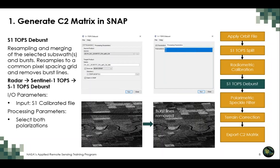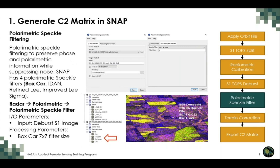The Sentinel-1 TOPS De-burst tool reduces image distortion between burst lines by resampling and merging bursts into a common pixel spacing grid and removing burst lines. To open the de-burst tool, under the Radar Processing tab, select Sentinel-1 TOPS De-burst. In the Input/Output Parameters, select the calibrated output file from the previous step and define an output target file. Select both polarizations in the Processing Parameters tab, run the tool, and inspect both processed and unprocessed images to ensure burst lines have been removed.